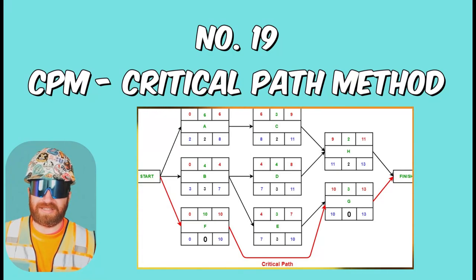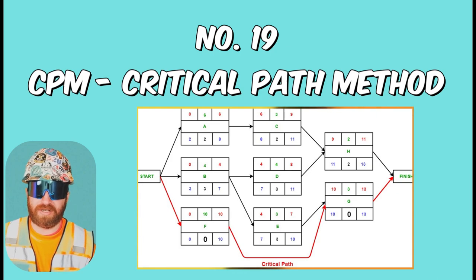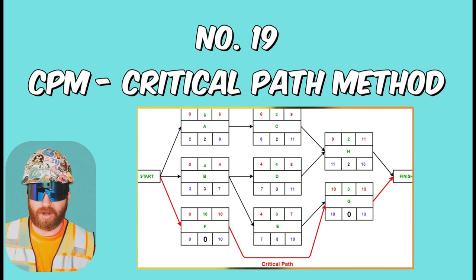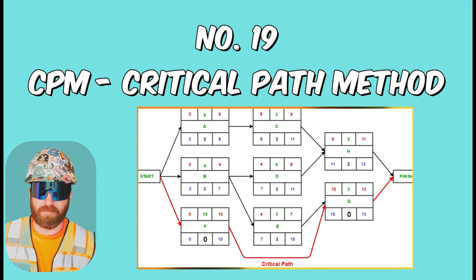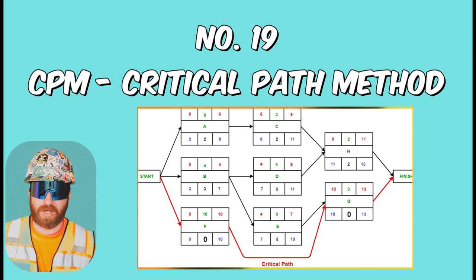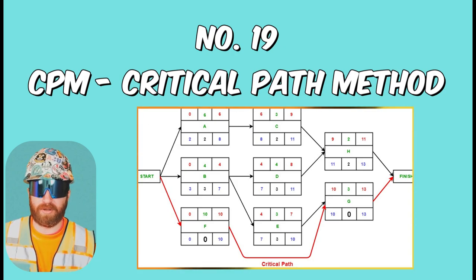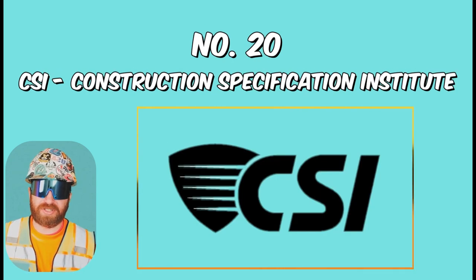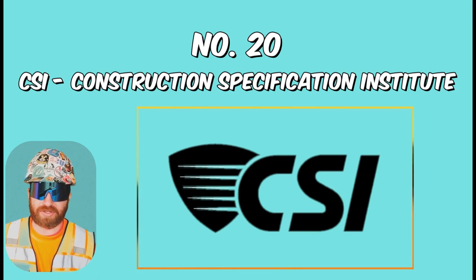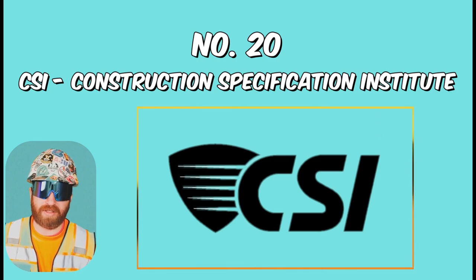CPM, or Critical Path Method, is a scheduling technique that shows you the longest sequence it would take for construction activities to take place. Many activities on a job site can happen at the same time; however, a critical path shows what activities must happen before the next activity can start, which creates a schedule with zero float. This essentially means how long it'll take to get the building done from point A to point Z. CSI, or Construction Specifications Institute, developed a standard layout for construction specifications which we see in the construction documents.